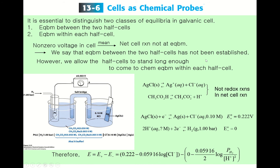The next topic is to use electrochemical cells as chemical probes. It is essential to distinguish two classes of equilibria in a galvanic cell: first, the equilibrium between the two half cells, and second, the equilibrium within each half cell.